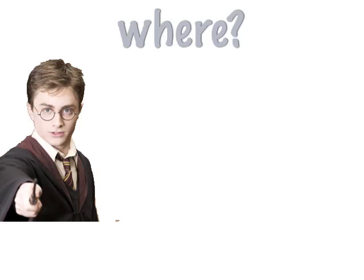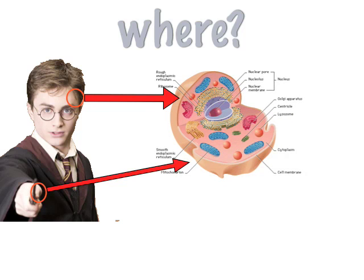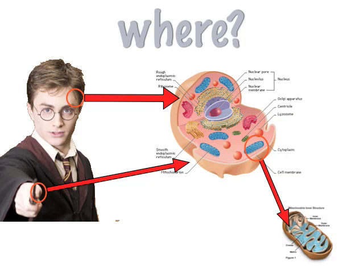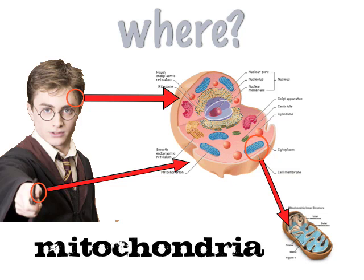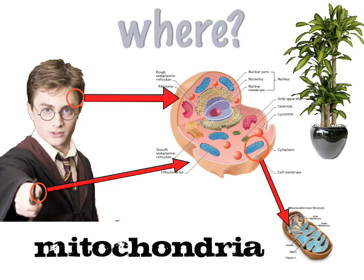Where does cellular respiration happen? If you take any cell and look at it, there are organelles called mitochondria. Mitochondria is the location where glucose enters and makes ATP. But be careful — plants also perform cellular respiration; they have mitochondria as well.